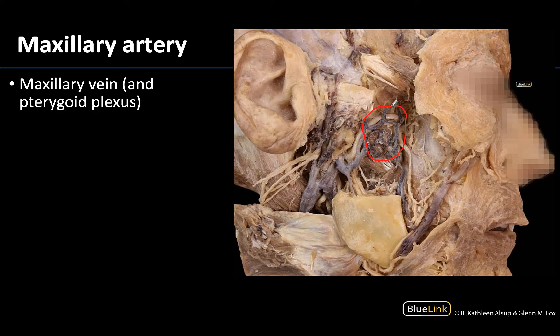You can see these are quite small but this plexus of veins is quite dominant in this region. All of these smaller branches will coalesce or join to form the maxillary vein, which you can see right here. The maxillary vein is generally larger in diameter but it is pretty short. It will fairly quickly join with the superficial temporal vein to form the retromandibular vein.